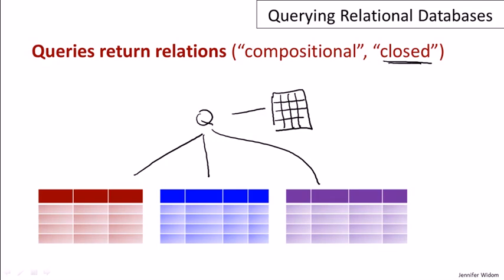For example, when I want to run another query, say Q2, that query could be posed over the answer of my first query, and could even combine that answer with some of the existing relations in the database. That's known as compositionality, the ability to run a query over the result of a previous query.